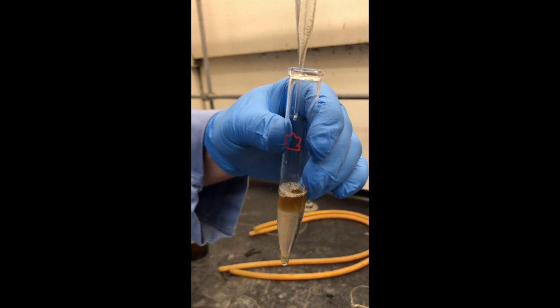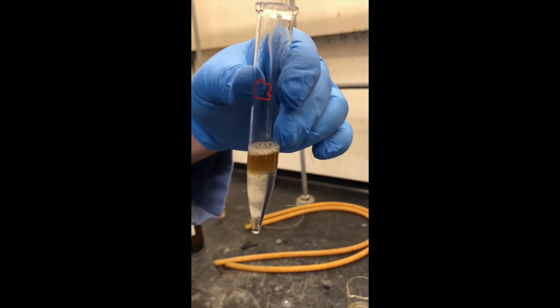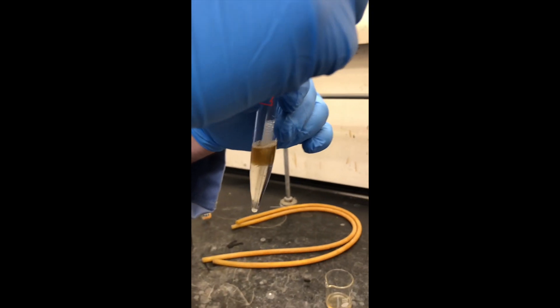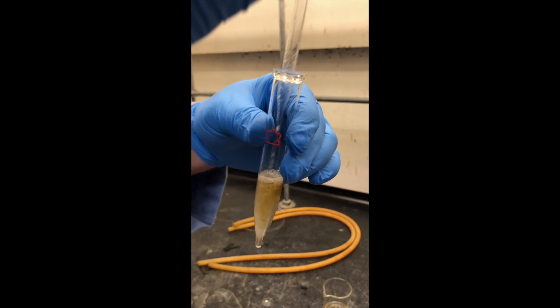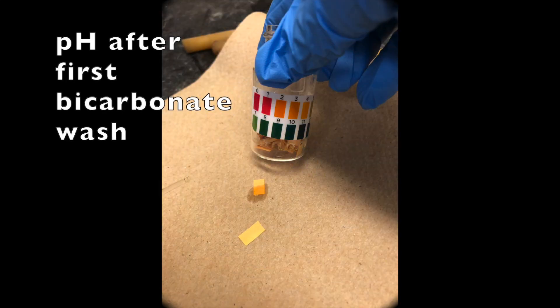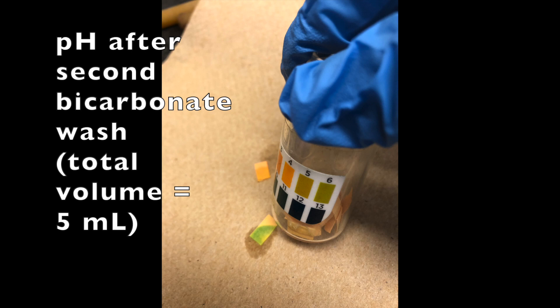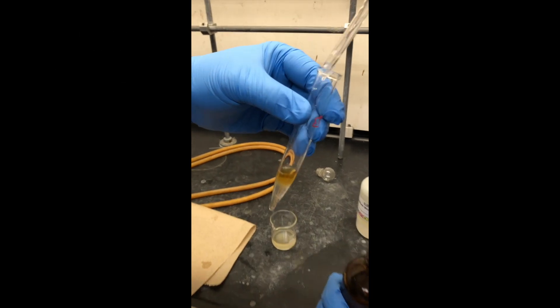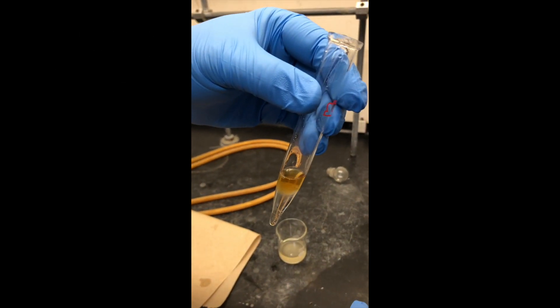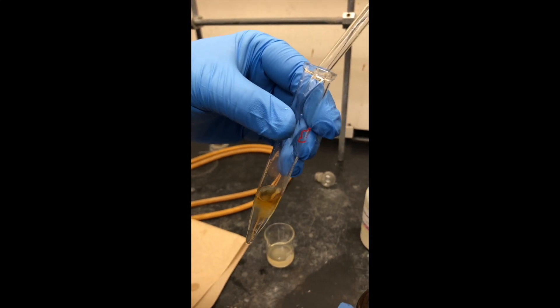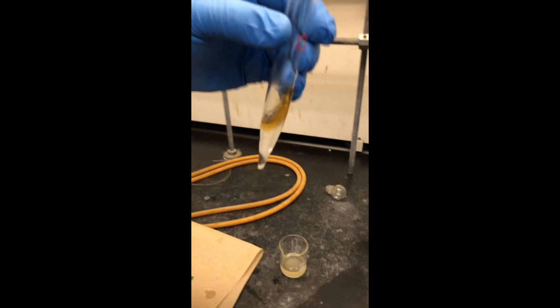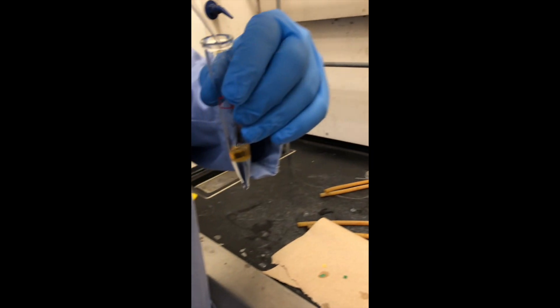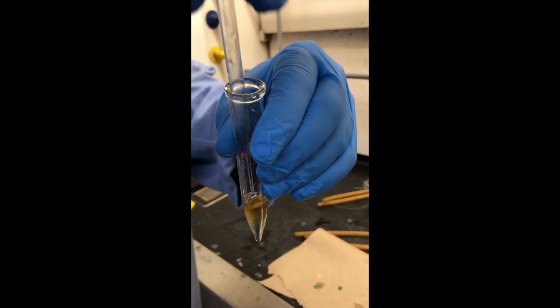We'll do that until it stops fizzing a little bit. So now we're adding two milliliters of four molar sodium chloride. And mix as before.